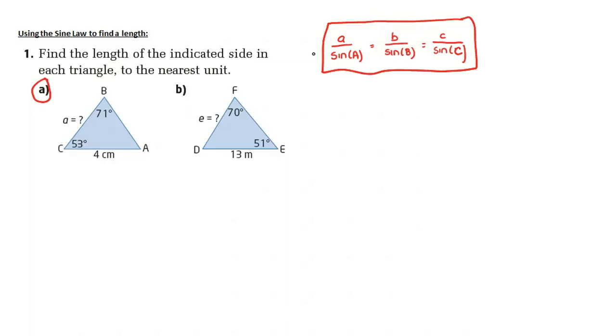To use the sine law, you need to ensure that you have at least one matching pair. In this case, I see that I have 71 degrees and 4 centimeters. So since I have one matching pair, that is a suggestion that I can use the sine law.